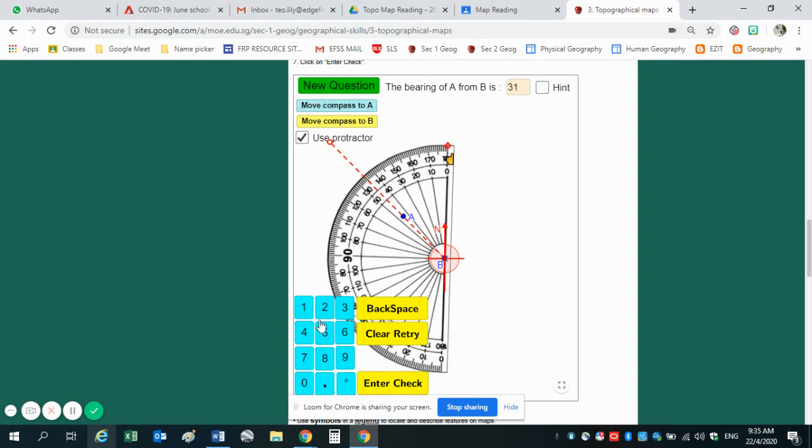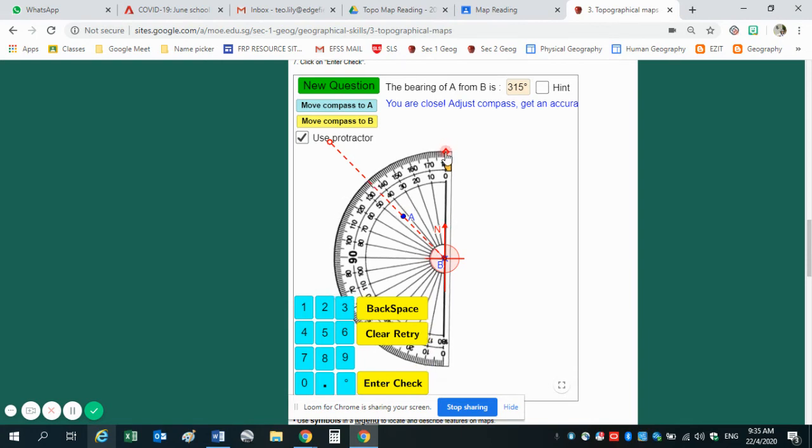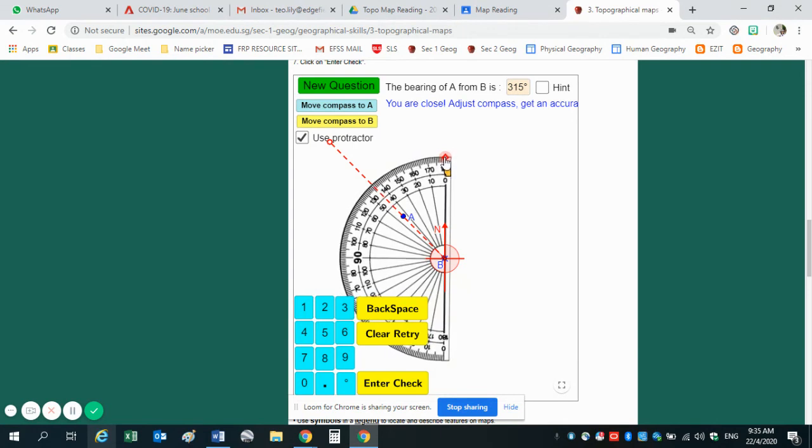So I type here 315 degrees. I enter. It says I'm very close. 315 is very close, so maybe I will have to do a bit of adjustment. I can see now it's 136. So let's try. Let's clear this entry. 316 degrees. Then you enter. Yes, it's correct. Well done.